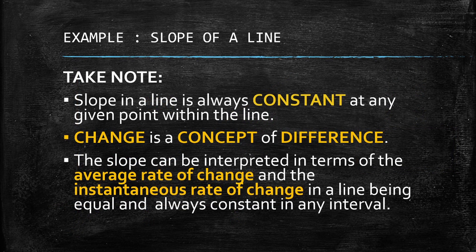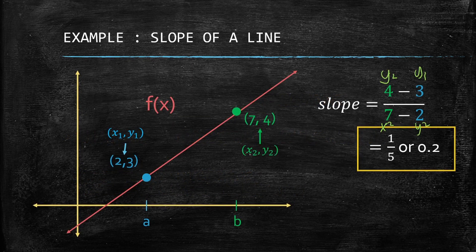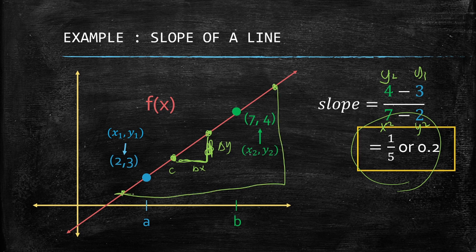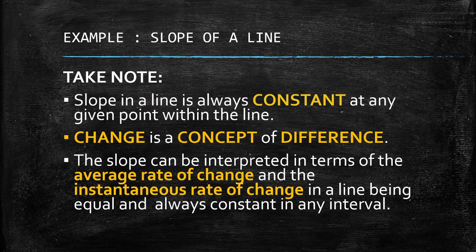The key thing to note is that the slope of a line is always constant at any given point within the line. This means that even if we choose any other pair of points — say points c and d — the ratio delta y over delta x will still give us the same constant ratio of 1/5, or 0.2.